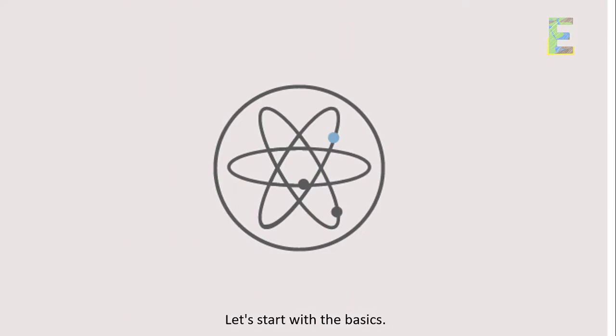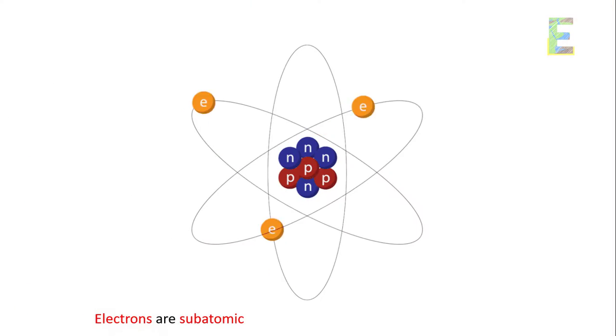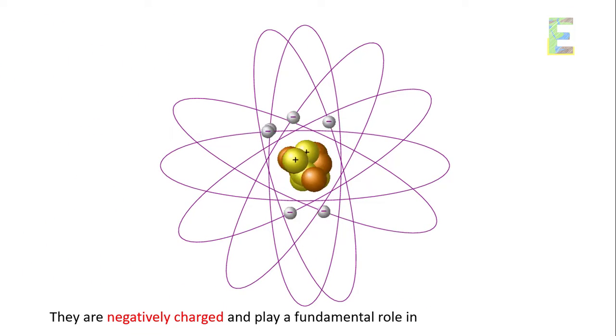Introduction to Electrons. Let's start with the basics. Electrons are subatomic particles that orbit the nucleus of an atom. They are negatively charged and play a fundamental role in the behavior of matter.